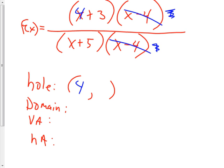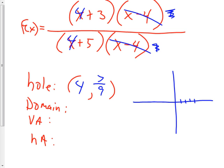So then this 4 goes in here, and I get 4 and a 4 — that makes it 7 over 9. So the hole is at 4 comma 7-ninths. That means if I was graphing this thing, I'd go over 4 and up 7-ninths, which is almost 1. So it's kind of low down, but it's about there. And it's an empty spot, so I put an empty spot.